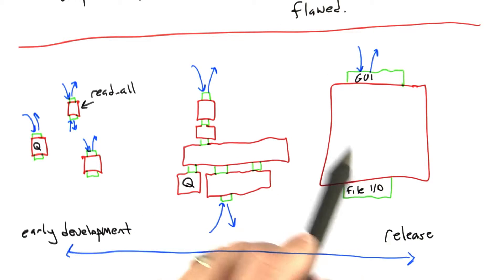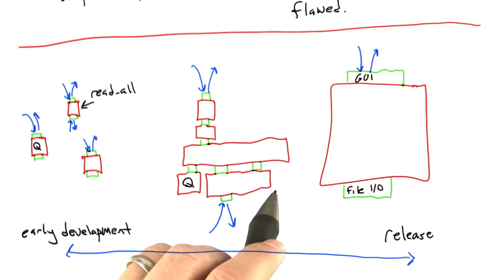And so what we want is to build these system-level random testers as early as possible in the development process. And there are a number of reasons for this. First of all, what we'd like to do is start off with a simple version of our system that doesn't implement very much functionality,